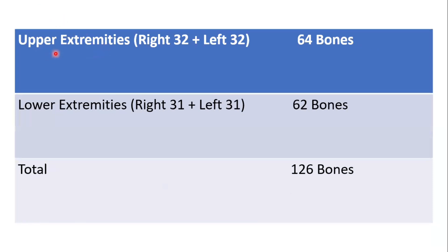This is a summary of the table. Upper extremities: right 32, left 32, totaling 64 bones. In total there are 126 bones in the upper and lower extremities combined.